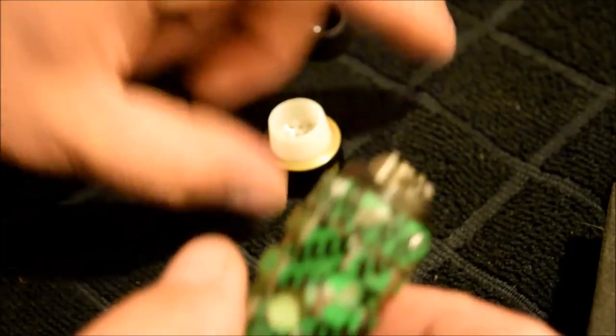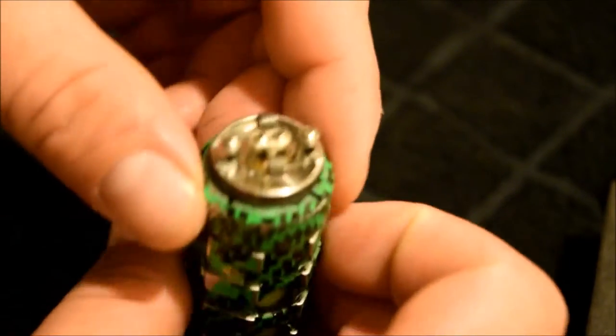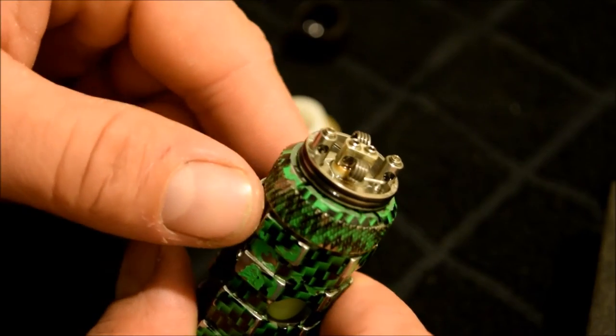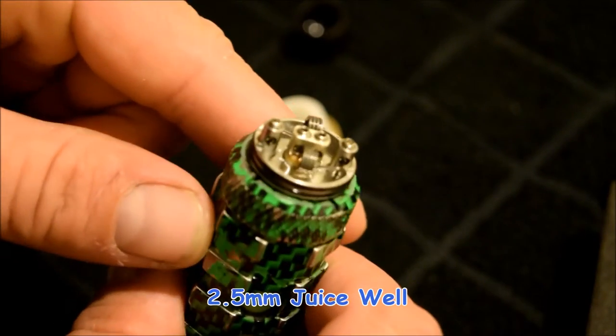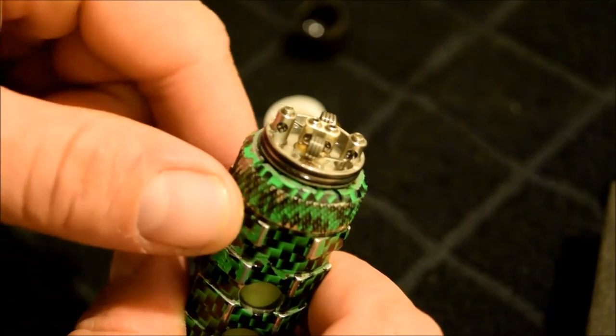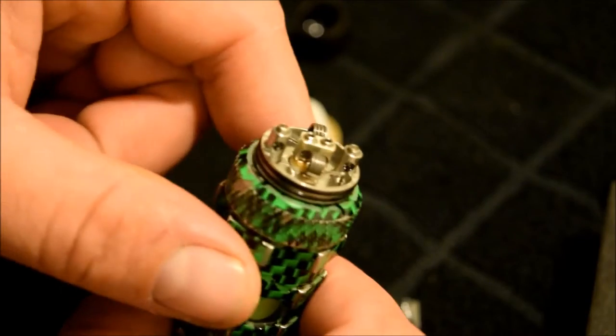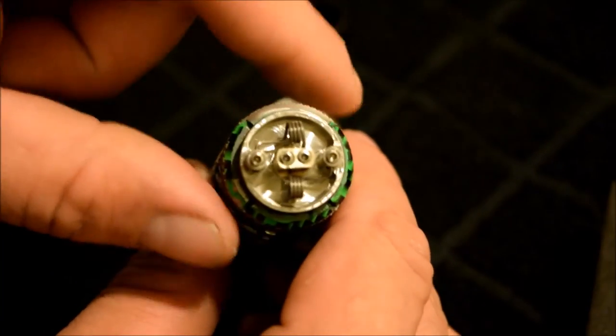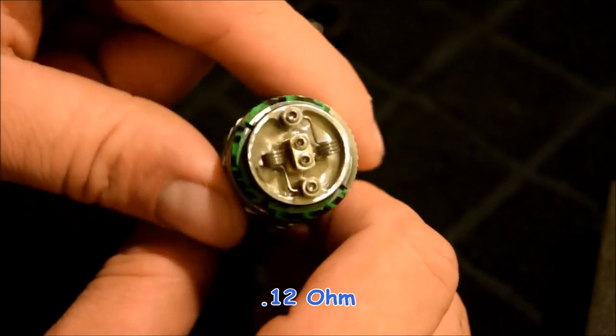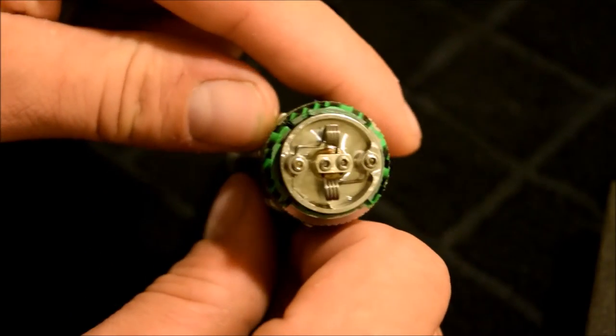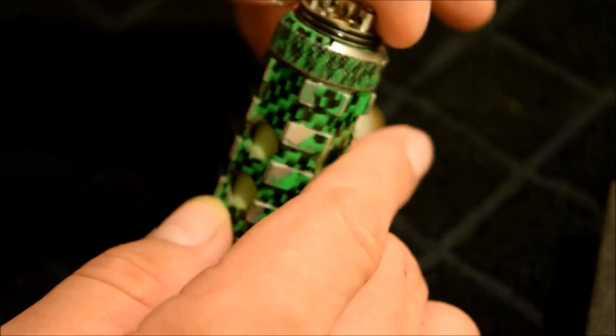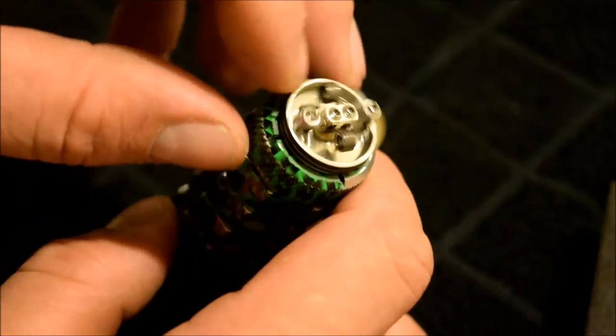Okay, pop it off. All right, so here is the deck. It is a 2.5 millimeter well. You have that quad post design there for easier coil builds. I have a 0.12 ohm build in here right now. 22 gauge. 2 millimeter post holes. So nice big holes for nice low ohm builds.